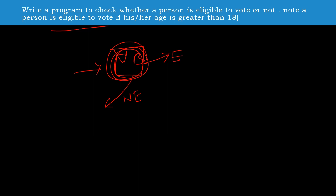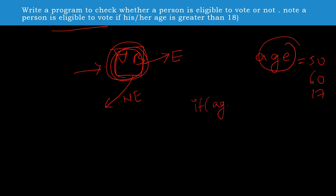First of all, think in a mathematical manner. You need to decide if a person is eligible or not. We have operators like greater than or less than that we need to use. We know the person's age — like 50, 60, or 17. If the person's age is greater than or equal to 18, then we need to print 'eligible' because if the age is greater than 18 they are eligible to vote.